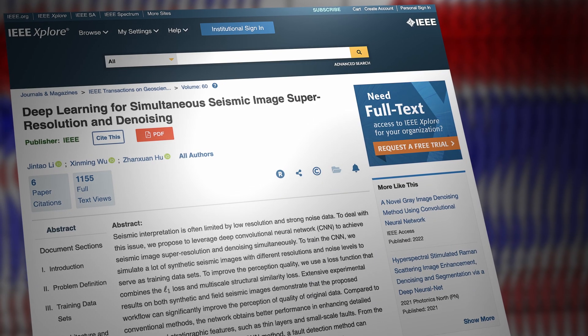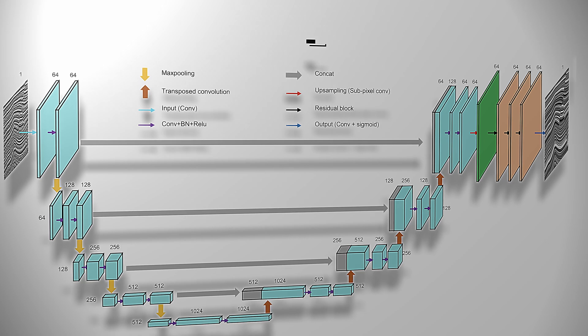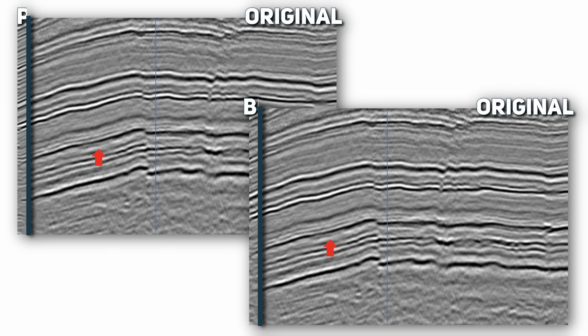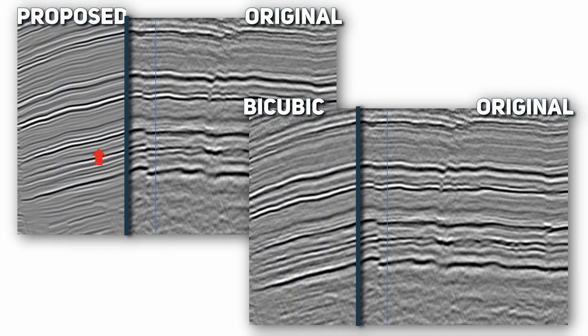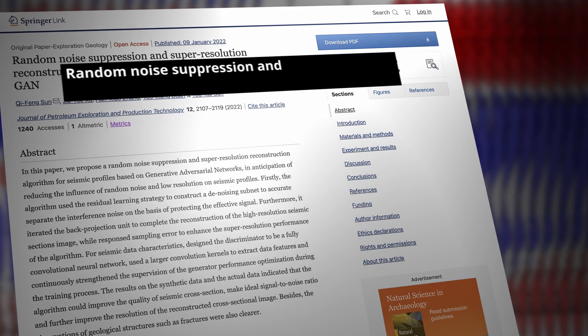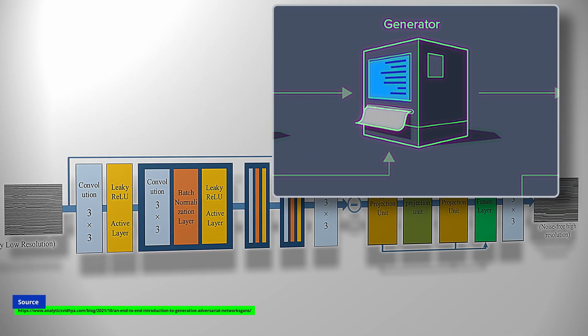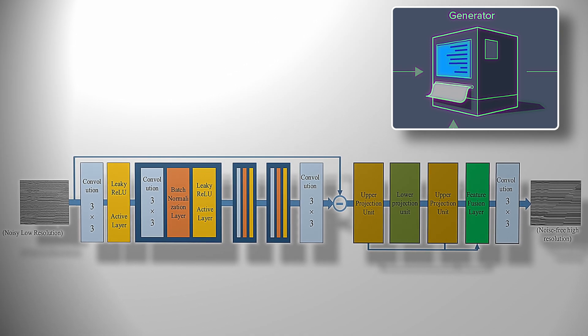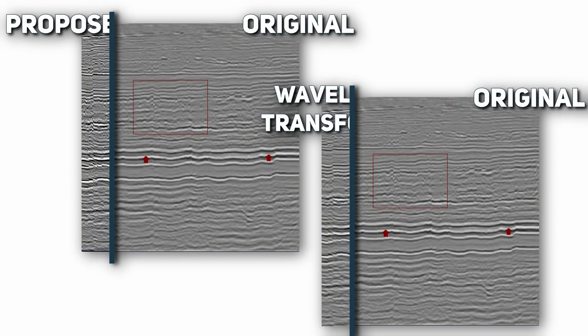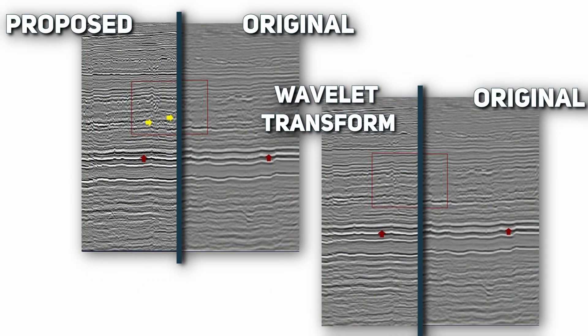The first supporting paper, by Jin Tao Li published in 2021, proposed a multiscale convolutional neural network model to learn high-low resolution image pairs. Results show this method is superior to traditional methods in terms of peak signal-to-noise ratio and structural similarity. Another recent paper, by Q. Feng Sun published in 2022, proposed a random noise suppression and super-resolution reconstruction algorithm based on generative adversarial networks, which improved the quality of seismic cross-sections and made the observation of geological structures such as fractures clearer.